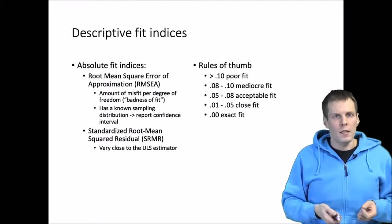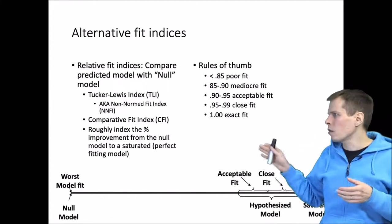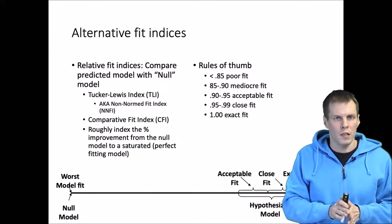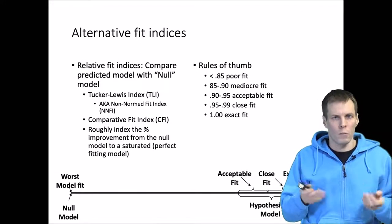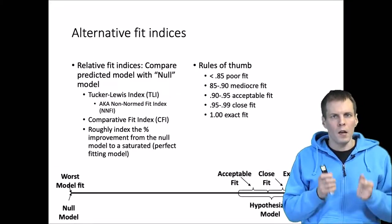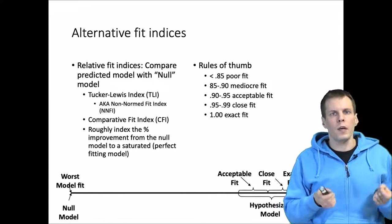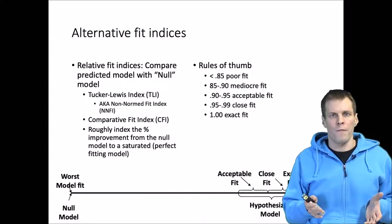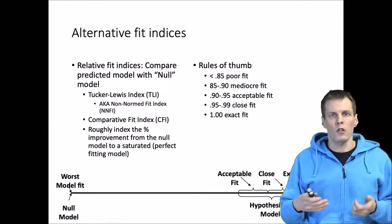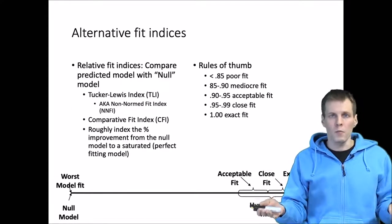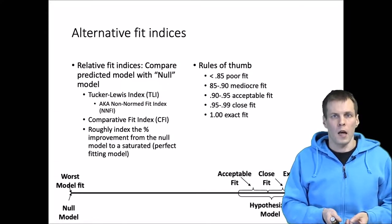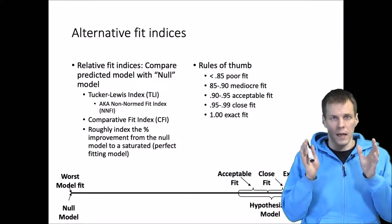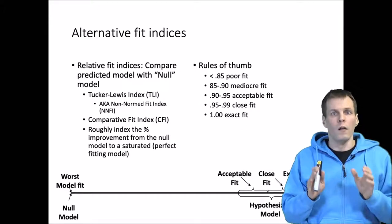The other family of fit indices are comparative fit indices. We calculate our hypothesized model, giving us the chi-square, then we calculate two alternative models. The null model is a model that should not fit the data at all — typically it constrains variables to have estimated variances but forces them to be uncorrelated. Since we often study highly correlated measures, forcing a model that says the indicators don't correlate will fit really badly.